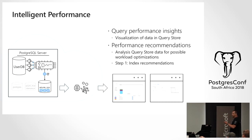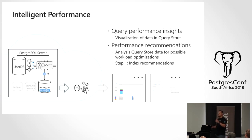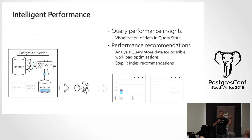For intelligent performance, here's the process: we analyze the query store for workload optimizations, then look at hypothetical indexes and statistics to determine whether to create or drop an index. We assess whether adding an index will improve reads, and if so, we calculate the percentage improvement in read performance versus the write overhead of maintaining the index. The system does all of this automatically and either applies it or gives you a recommendation.